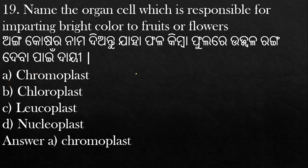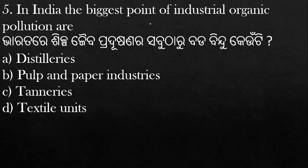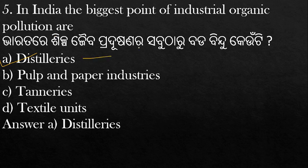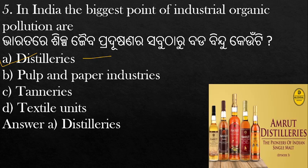In India, the biggest source of industrial organic pollution comes from which industry? The options are distilleries, pulp and paper industries, tanneries, and textiles. The answer is distilleries — the liquor/alcohol factories are the biggest point source of industrial organic pollution in India.